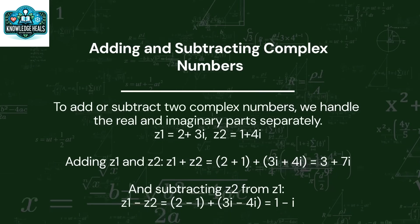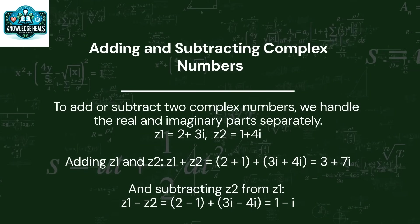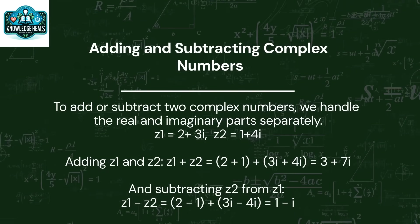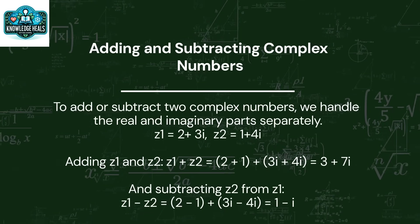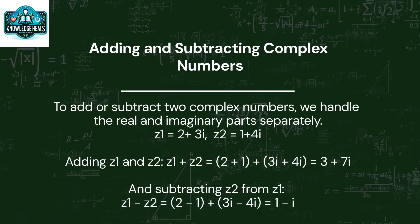Let's look at an example. Z1 equal to 2 plus 3I, Z2 equal to 1 plus 4I. Adding Z1 and Z2, Z1 plus Z2 is equal to 2 plus 1, plus 3I plus 4I, which is equal to 3 plus 7I.